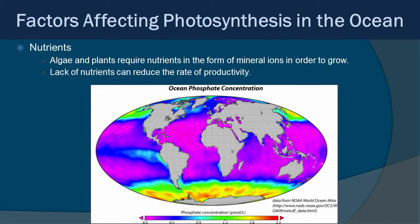Nutrients, on the other hand, are a really big deal. Algae and plants require nutrients in the form of mineral ions — things like phosphates and nitrates — in order to grow, and lacking nutrients can reduce the rate of productivity. Looking at ocean phosphate concentrations globally, a good chunk of the ocean, especially in the tropical latitudes, are essentially nutrient deserts. Areas where you do see a lot of phosphate correlate with areas of high productivity. So nutrient availability is a key factor in whether you have productivity in an area or not.